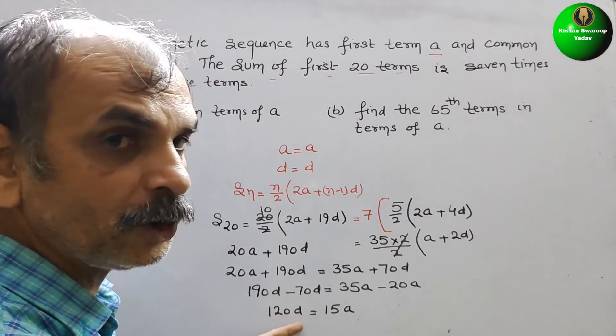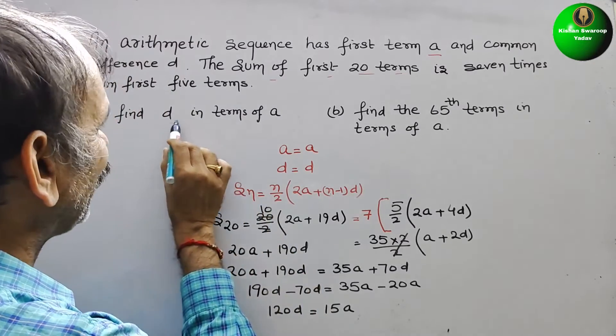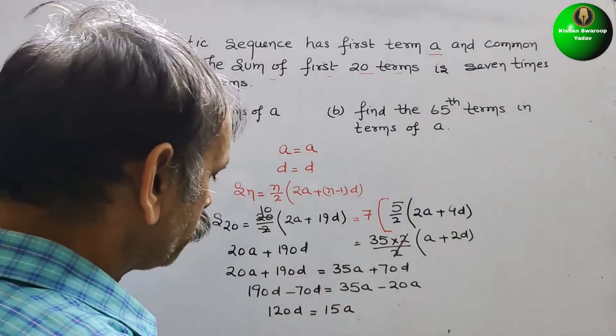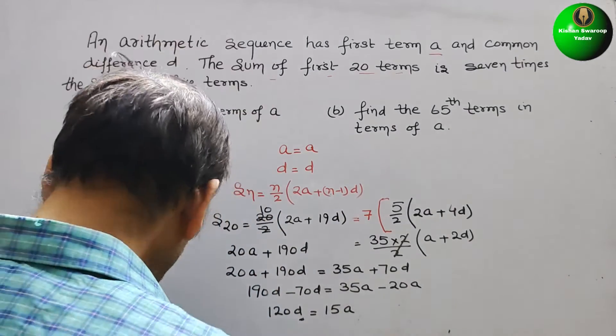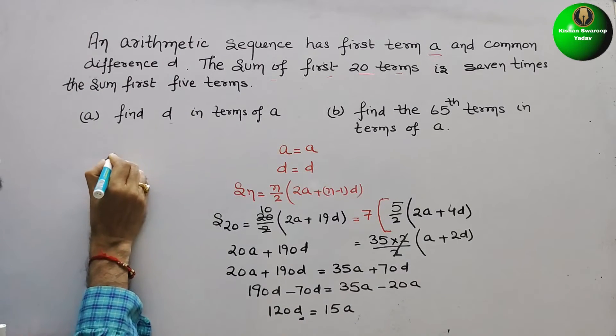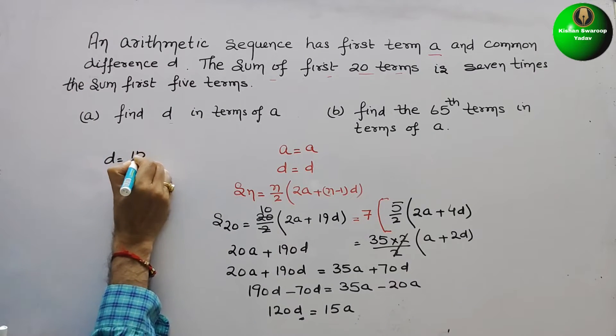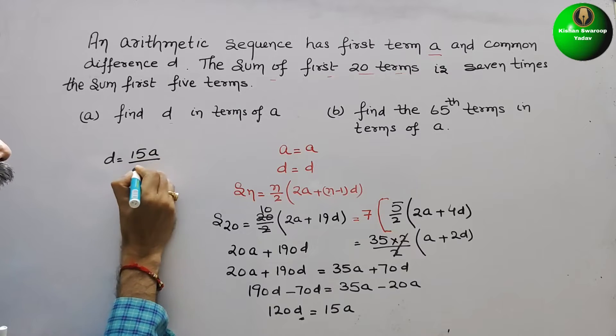So now what is your D? They have told find D in terms of A. So now what is D here? We can say D equals 15A by 120.